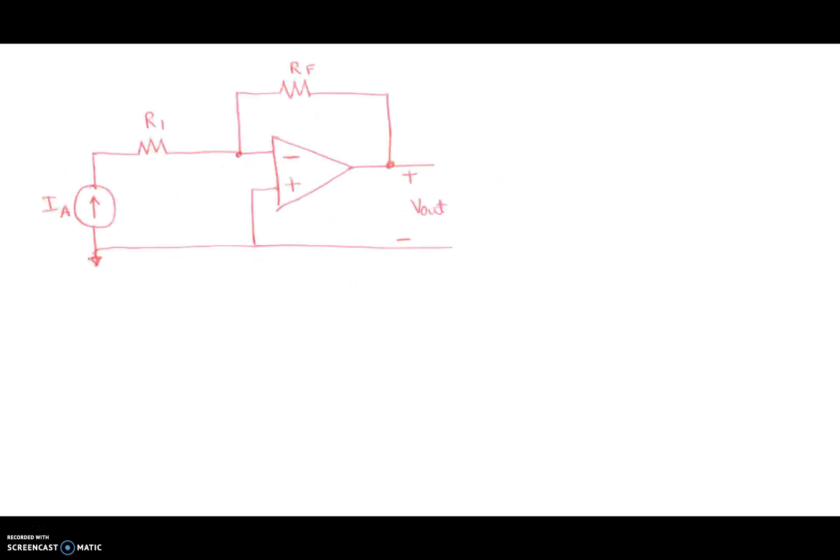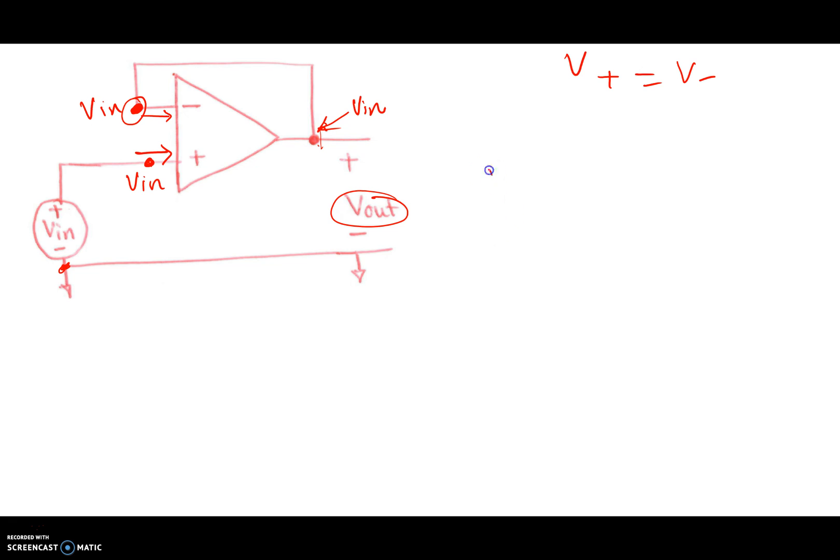So in other words, in this particular topology, V out is equal to V in. So the output voltage is the same as the input voltage. This is a fairly popular topology.